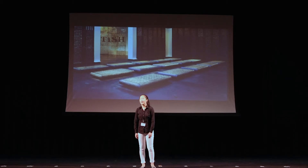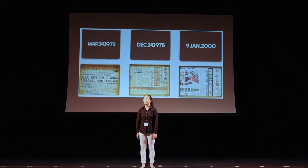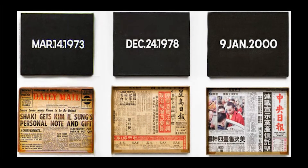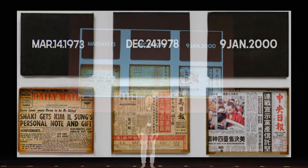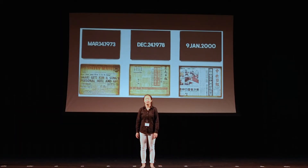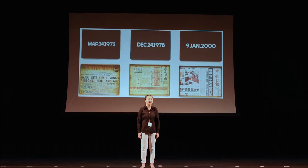On Kawara created time-based art, where each piece displays the date of its creation — each hand-painted and therefore unique — showing the passage of time. The dates are written in the language of the area he was in, and if Kawara didn't finish a piece before midnight, he would destroy it. His art, in a sense, ended when he passed.